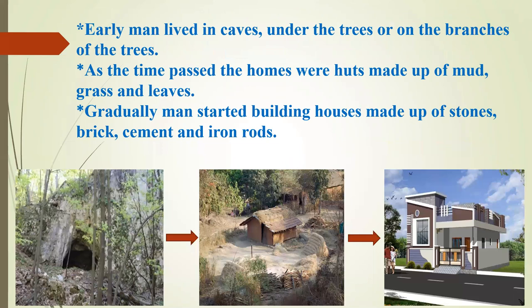Early man lived in caves, under the trees or on the branches of the trees. As time passed, the homes were huts made up of mud, grass and leaves. Gradually, man started building houses made up of stones, brick, cement and iron rods.